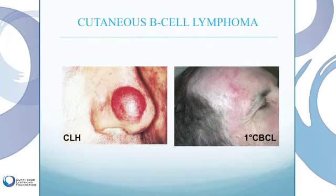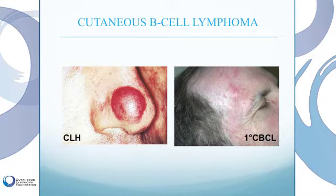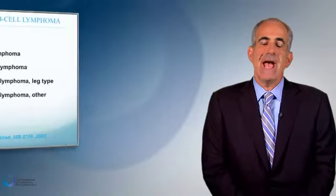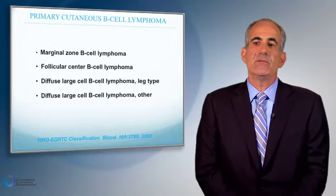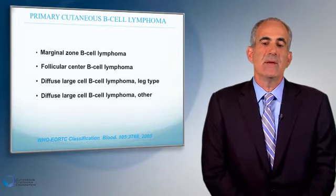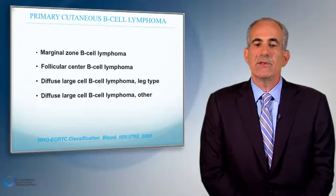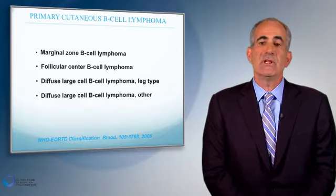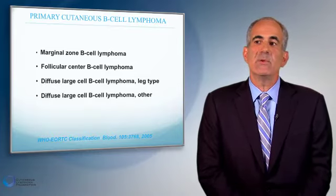Just as there are lymphomas of T-cells, there are also lymphomas of B-cells. Here you see a couple photographs of B-cell lymphoma presentations on the skin. They typically present as red or purple nodules. On the left side, you see basically a red nodule on the nose, and on the right, plaques about the forehead and temple — a typical presentation of cutaneous B-cell lymphoma. We categorize lymphomas by different types of presentations, locations, patterns on the skin biopsy, as well as different proteins or subcategories of lymphocytes.